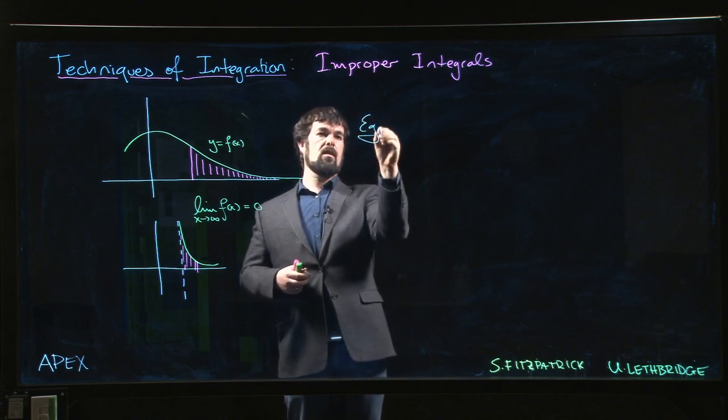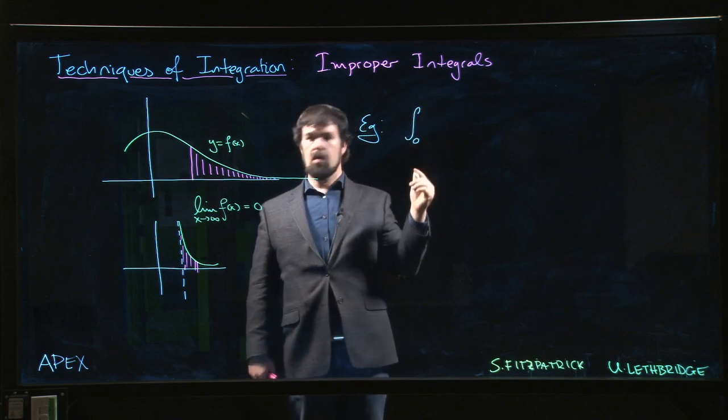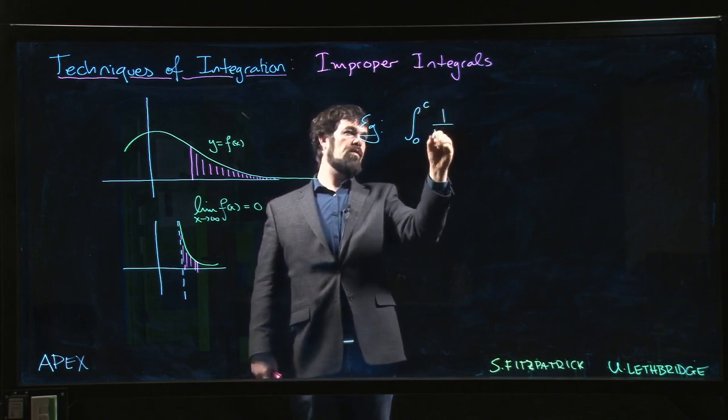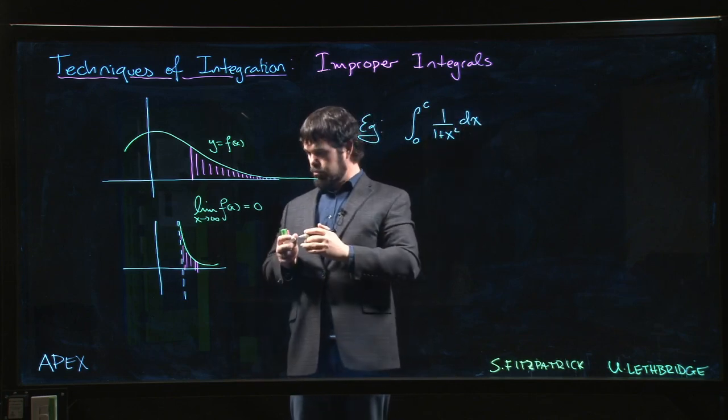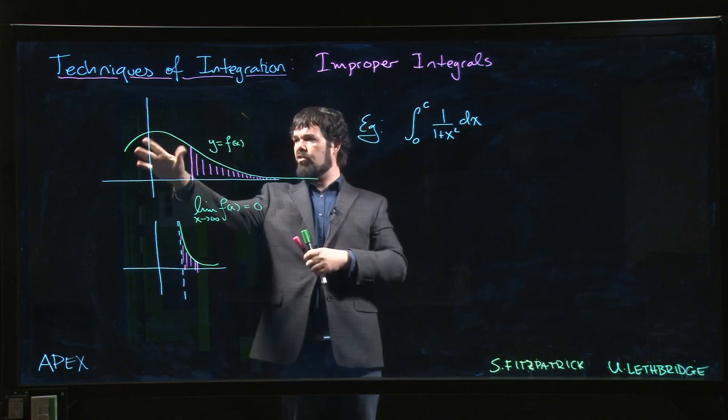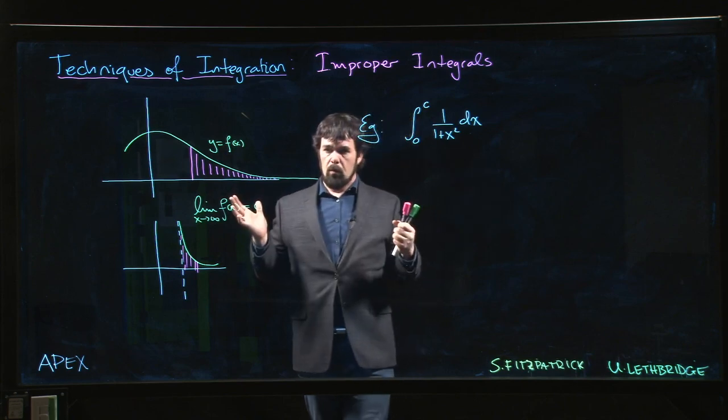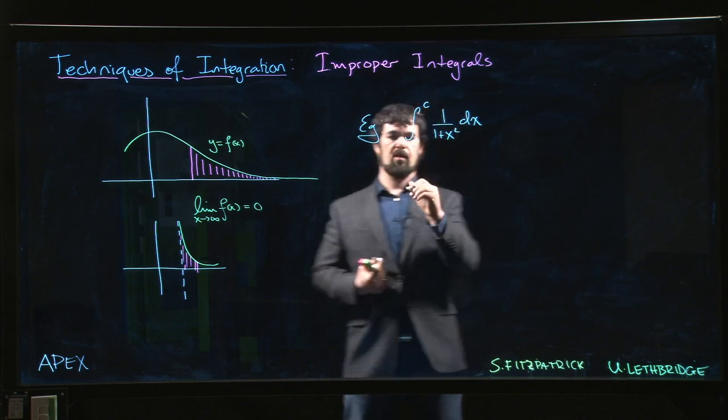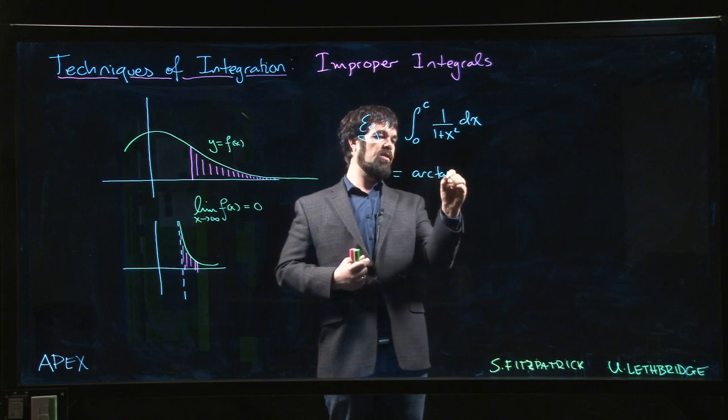Let's say we're doing the integral from zero to some value, let's call it c, of one over one plus x squared. That's a function whose graph maybe looks something like this - sort of like a bell shape. The nice thing about this one is we know an antiderivative.